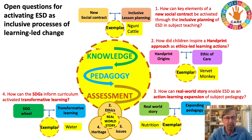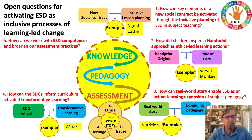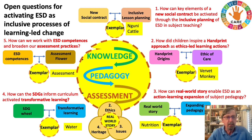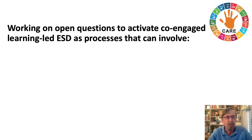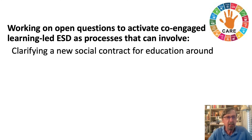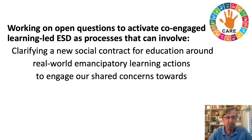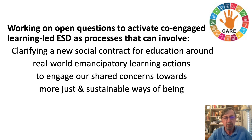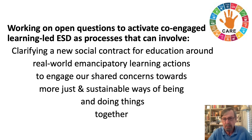The heritage styles fit into the triad of approaches to ESD. We then look at the ESD competences and assessment, and the problem of whether we can combine ESD competences with the competences specified in the curriculum. Here we look at an exemplar that explores assessment for learning and assessment of learning. In this way, we open up the field of ESD through a series of open questions to activate co-engaged learning-led ESD as processes that clarify a new social contract for education around real world emancipatory learning actions, to engage our shared concerns towards more just and sustainable ways of being and doing things together — the handprint way.